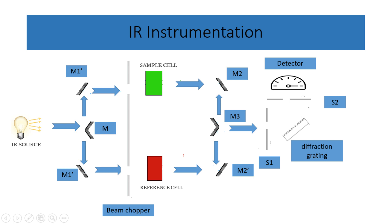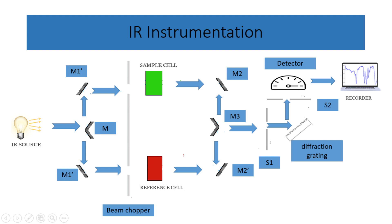Various types of detectors, such as bolometers, thermocouples, thermistors, or other sensors, measure the intensity of the transmitted or absorbed light. The electrical signal generated by the detector is then amplified to improve the signal's strength and clarity. Finally, the recorder displays the amplified signal as an infrared spectrum, usually indicating the percent transmittance or absorbance at different wavelengths.